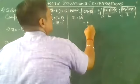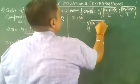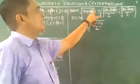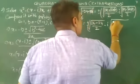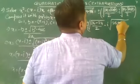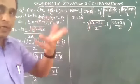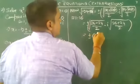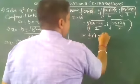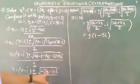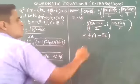It becomes ±√[(26 + (-24))/2] - i·√[(26 - (-24))/2] = ±√(2/2) - i·√(50/2) = ±√1 - i·√25 = ±(1 - 5i). So √(-24 - 10i) = ±(1 - 5i).